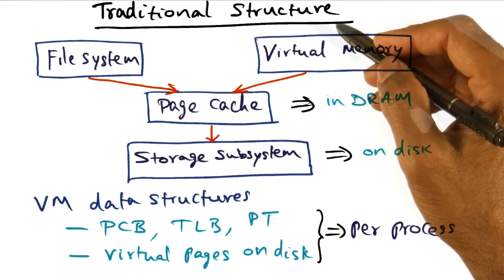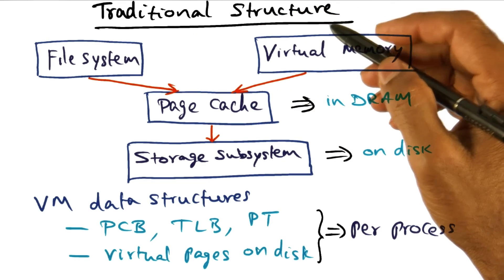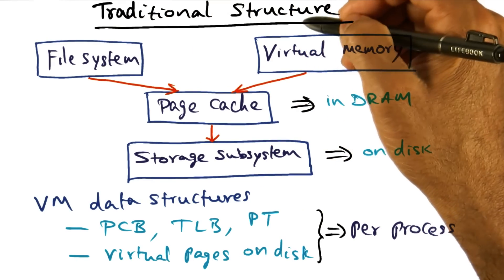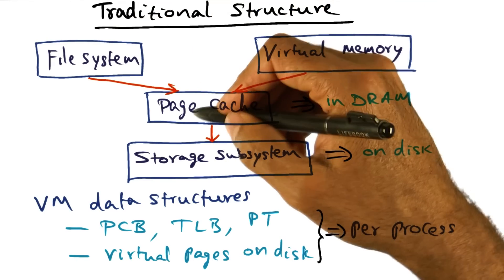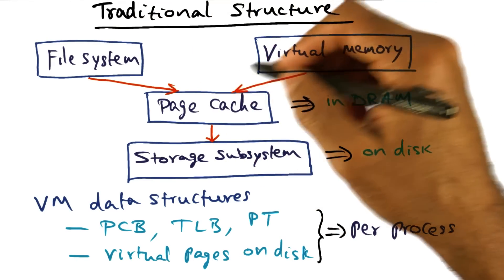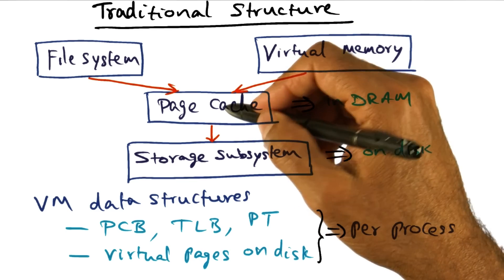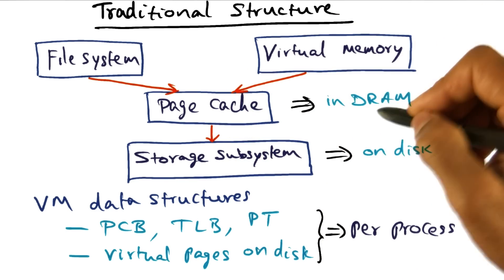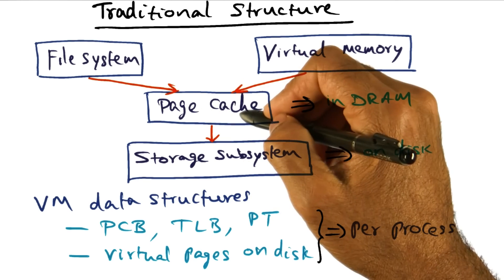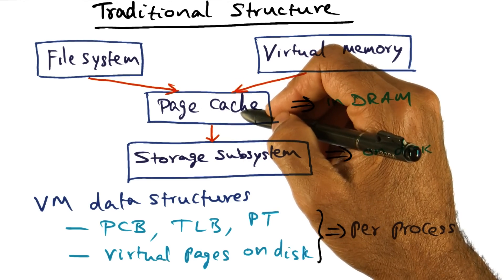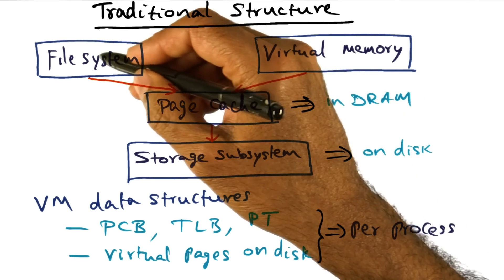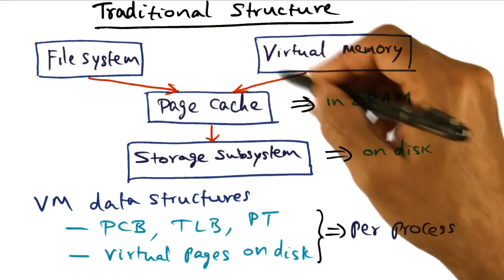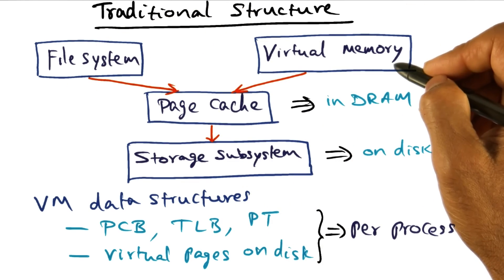Just to put our discussion in perspective, let's look at a traditional structure of an operating system. In the traditional structure of the operating system, there's something called a page cache, which is in DRAM. This page cache is supporting both the file system and the virtual memory subsystem.